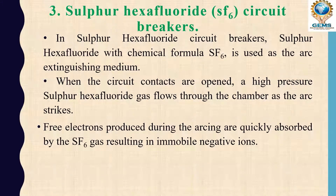Free electrons produced during the arcing are quickly absorbed by SF6 gas, resulting in immobile negative ions. The reason an arc forms is because of free electrons. Electrons carry current from one place to another. So if we remove these electrons, there is no chance for the arc to sustain.